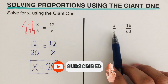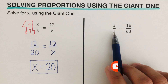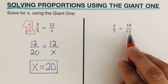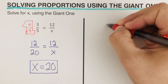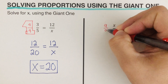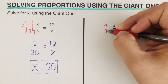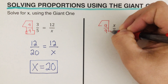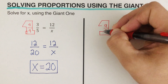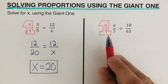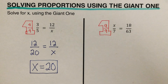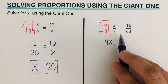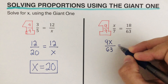Next example: I need to figure out what number to multiply by seven to get 63. That number is nine, because nine times seven is 63. So I'm going to multiply both the numerator and the denominator by nine. Nine divided by nine is one — that's why this method is called the giant one, because we are multiplying the left side of the equation by one. From here, nine times x is 9x, and that is over nine times seven, which is 63.